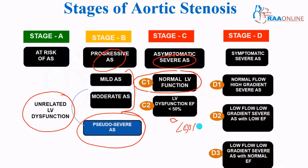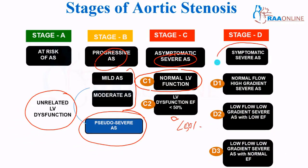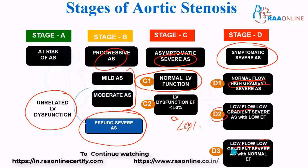Coming to Stage D — the patient has symptomatic severe stenosis, subdivided into three divisions. D1 is normal flow but high gradient severe aortic stenosis. D2 is low flow, low gradient severe AS with ejection fraction less than 50%, meaning low ejection fraction. In D3, it is low flow, low gradient severe AS but LV function is normal.